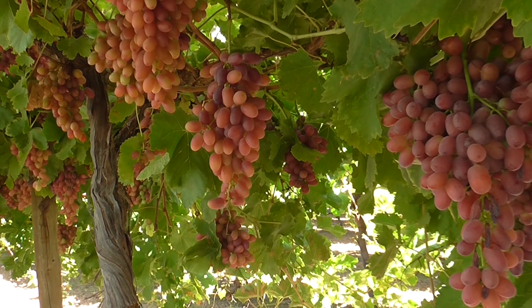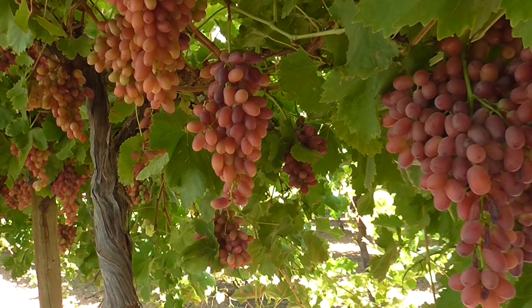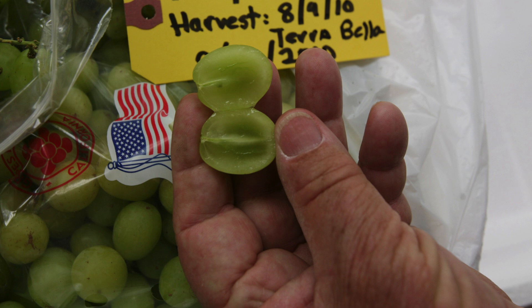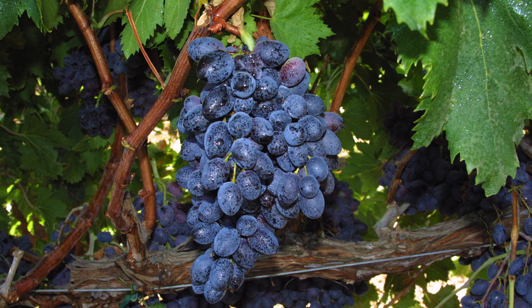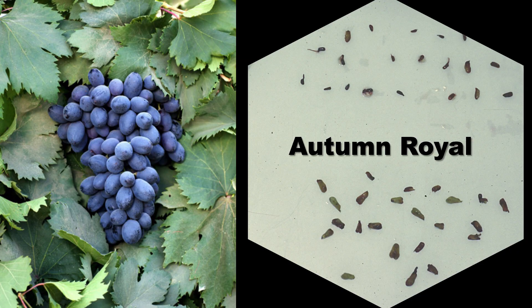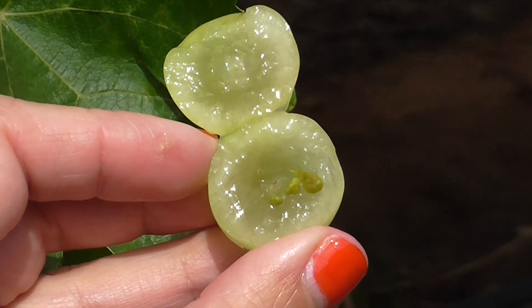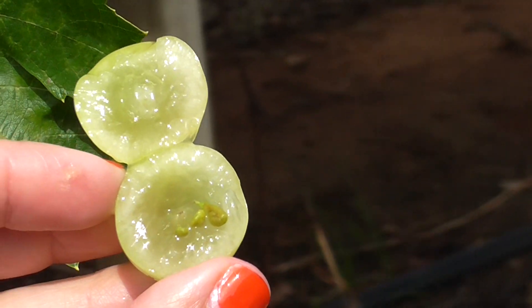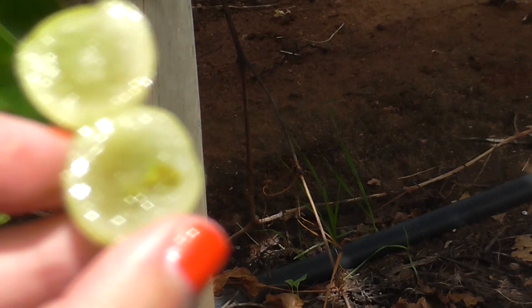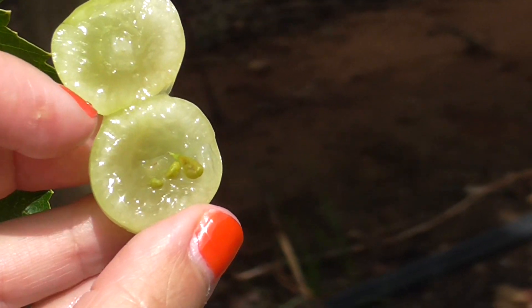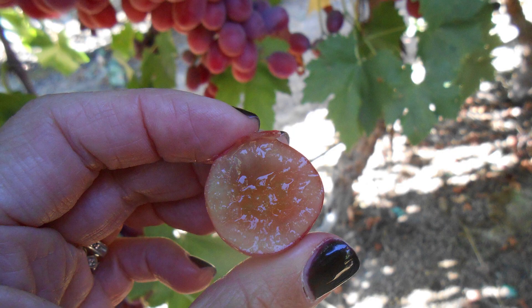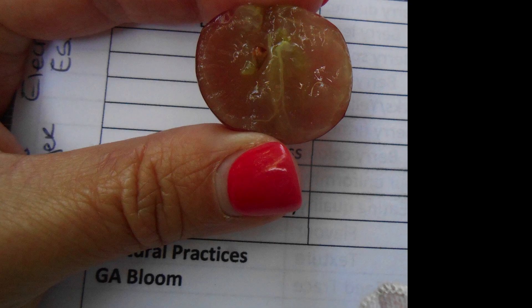Seed trace detectability is variable among varieties and season. Thompson Seedless contains small, soft seed traces which usually go unnoticed, while other varieties may contain large, more prominent seed traces. In some years the seed traces of varieties like Autumn Royal may be more noticeable than others. Many factors influence seed trace detectability including the size of seed traces, the timing of embryo abortion, their degree of development in berries and the number of fertilised ovules. Varieties with small seed traces typically have embryo abortion occur in the early stages of berry development, while those with larger seed traces break down at a later developmental stage.